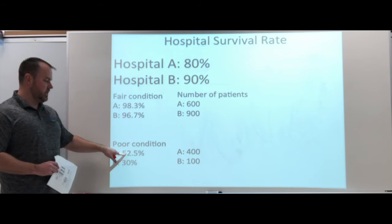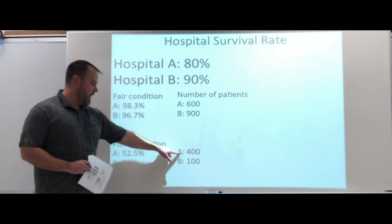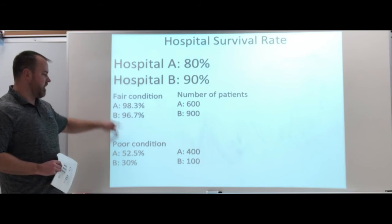Now, yes, Hospital A has more people at the fair condition compared to the poor condition. But there's more people here at Hospital A than at Hospital B. 400 compared to 100. It's a little more balanced between fair and poor.